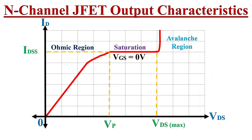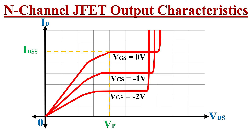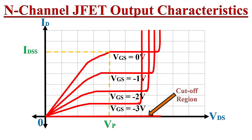Looking at the output characteristic curve with VGS equal to minus 1 volt, the saturation value of drain current has been reduced and avalanche breakdown appears at a lower VDS voltage level. Reducing VGS from minus 1 volt to minus 2 volts further reduces the saturation drain current. The saturation value keeps on reducing for further reduction of VGS, and whenever VGS equals minus VP, the saturation current essentially becomes zero. This region of operation is known as the cutoff region.